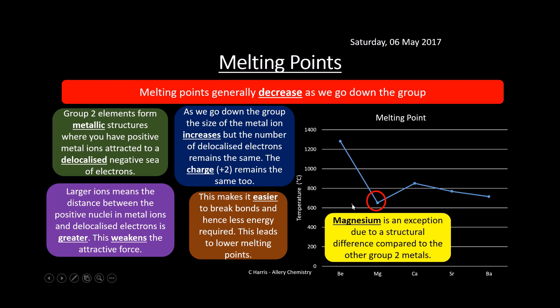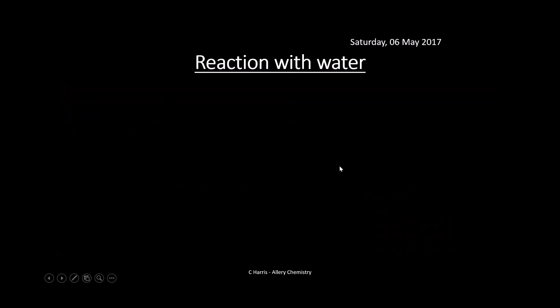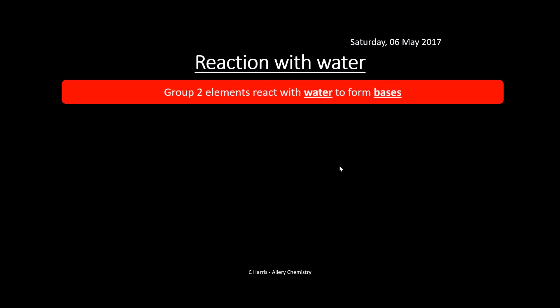There is a general decrease from beryllium to barium, with the exception of magnesium. This is due to some structural arrangement of magnesium - you don't need to know much about that.